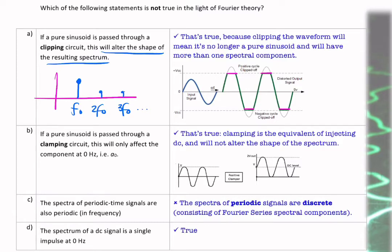Whereas if we were to pass it through a clamping circuit, the clamping circuit just adds DC. So the clamping circuit just lifts the circuit up, or it could lower it down. But basically it's adding DC.